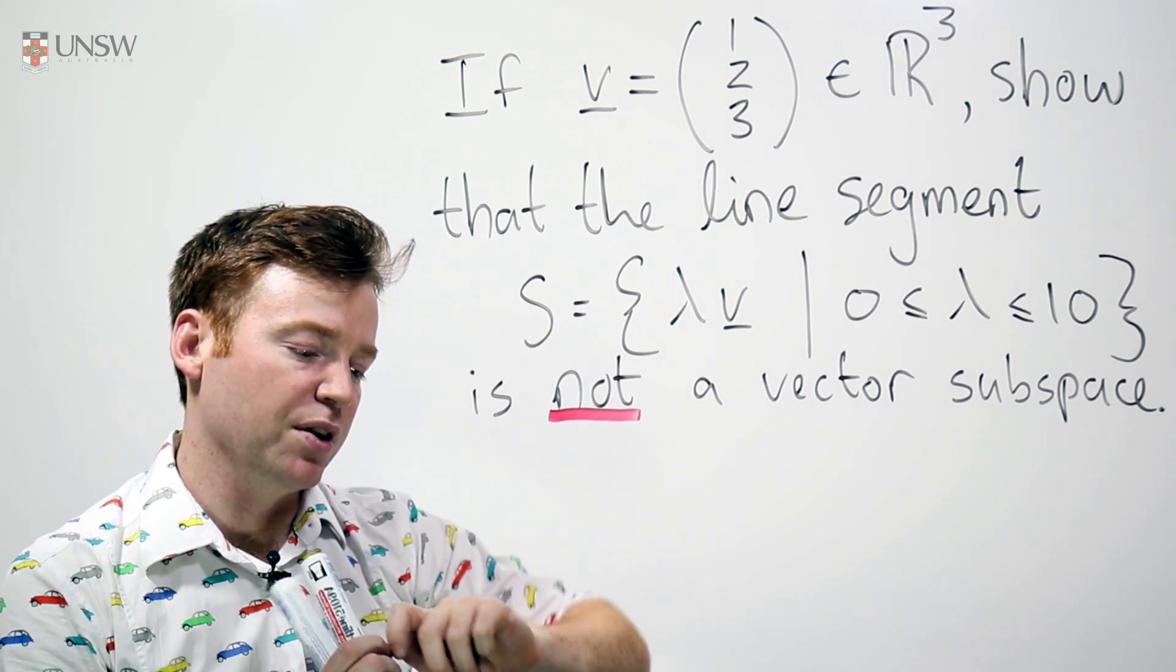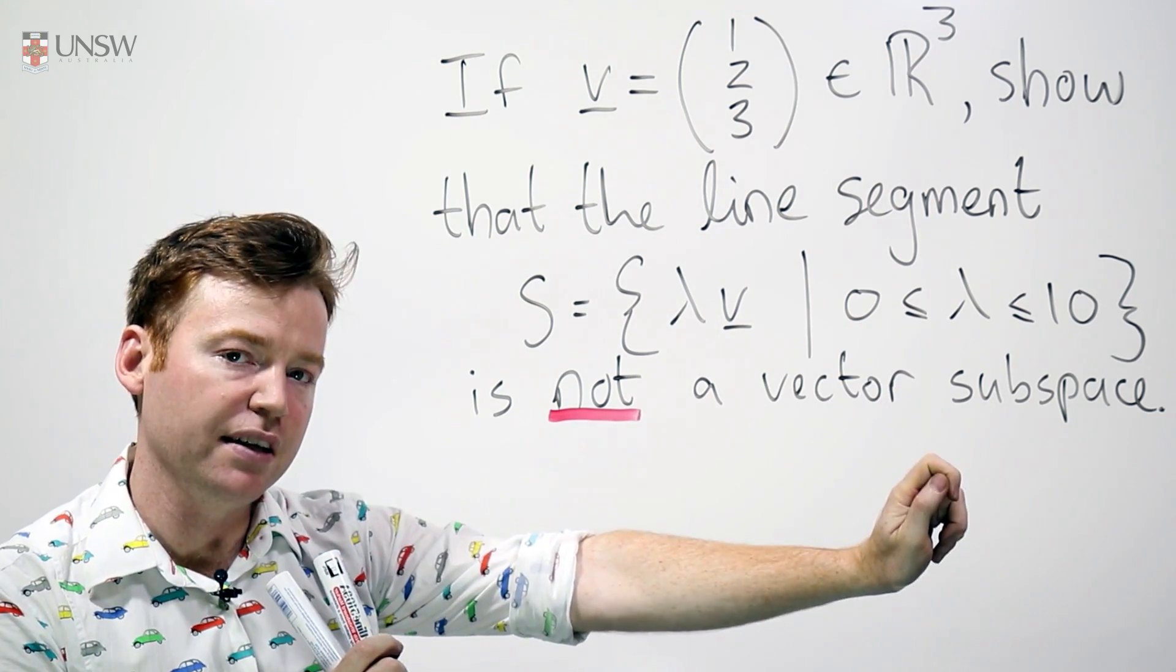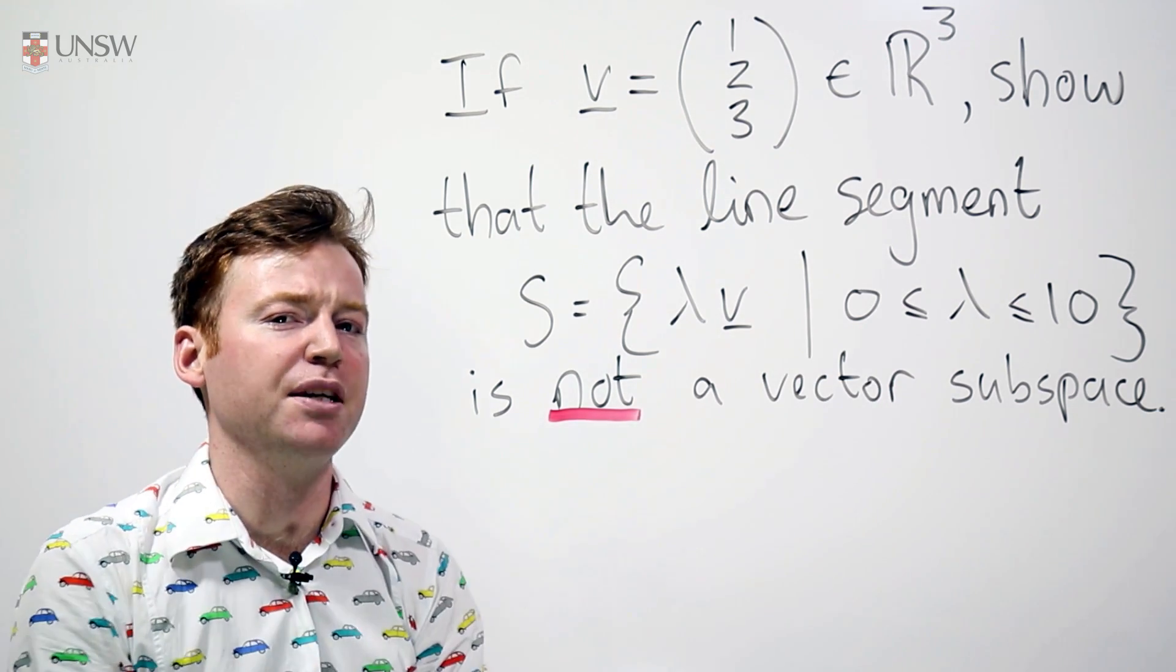where lambda ranges between 0 and 10, is a line segment from the origin, which is 0V, all the way up to 10V. So that's S, that's the beast we're dealing with here.